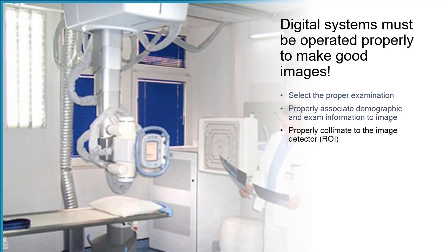Then, the radiographer would collimate to the area of interest. We only want the detectors to detect what tissue interfaces are in the area that we are examining. If we over-collimate, we lose data or we lose part of the image. If we do not collimate enough, or under-collimate, we get extraneous data to factor into our image parameters, and this can change somewhat the contrast of the image being displayed.